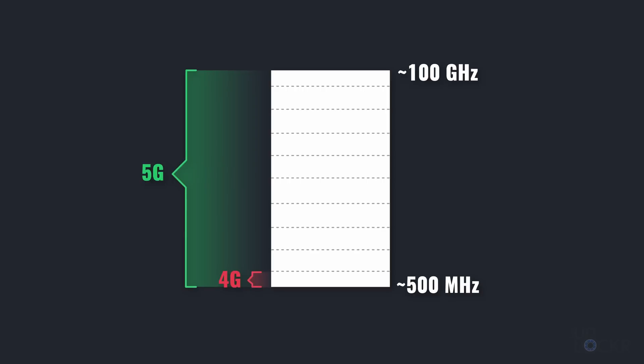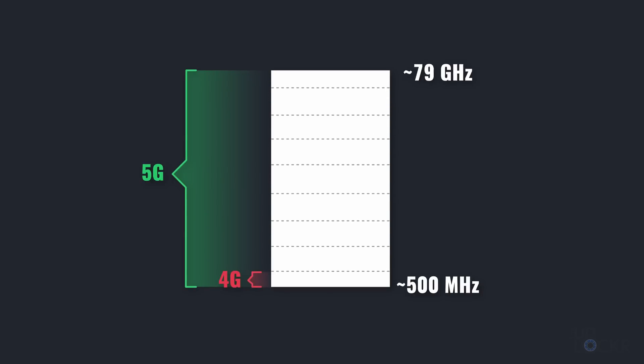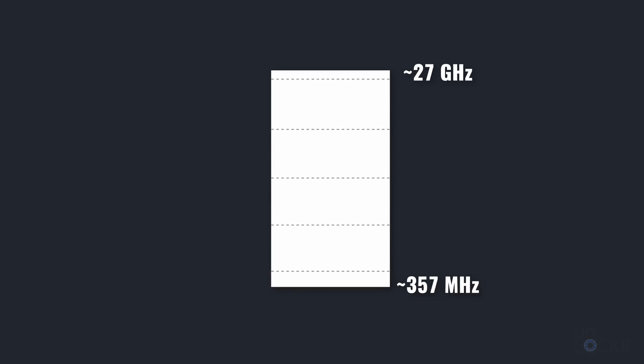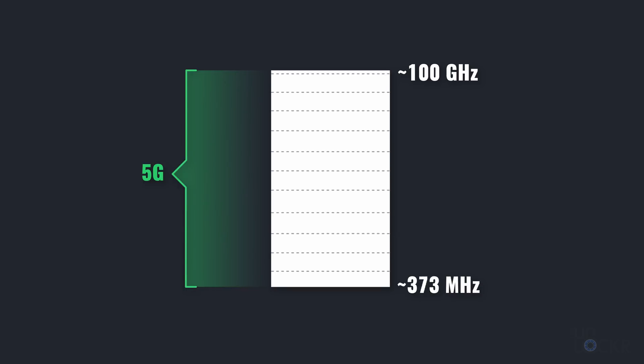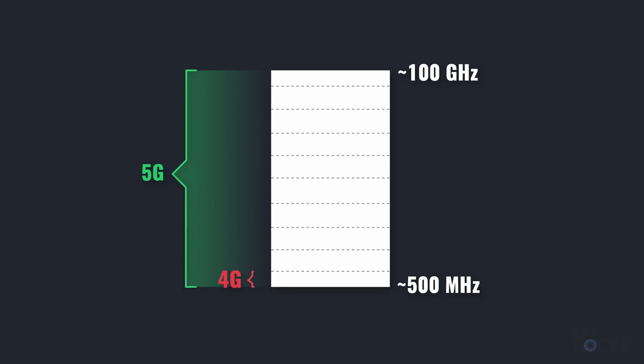All cell phone signals are carried over frequencies. Without getting too deep into it, 5G can run on a much larger swath of frequencies than 4G can — from the relatively low frequencies that 4G runs on, to the super high millimeter wave frequencies that you see all those crazy speed tests on the internet from.